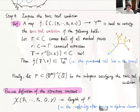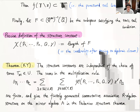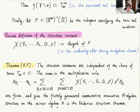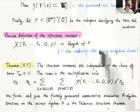The precise definition is again just a length of some zero-dimensional scheme — passing to algebraic logic, it's really a naive count, the cardinality of some set. We can show the structure constants, defined by counting these non-Archimedean disks, are well-defined and independent of many choices. Furthermore, the sums in the multiplication rule are finite, and they give a finitely generated commutative associative algebra structure on the mirror algebra A in the Frobenius structure theorem.